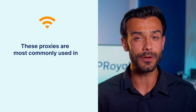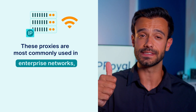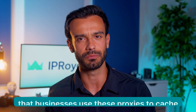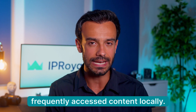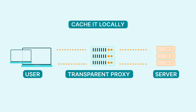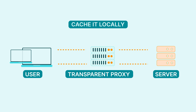These proxies are most commonly used in enterprise networks, institutions, and public Wi-Fi hotspots. Businesses use these proxies to cache frequently accessed content locally. This practice improves network performance and saves bandwidth, which is critical in large networks with many clients. Imagine having a network with a thousand computers that need to download an update. Instead of each computer downloading the same update separately, a transparent proxy can cache it locally and prevent network congestion.